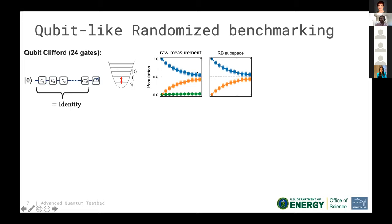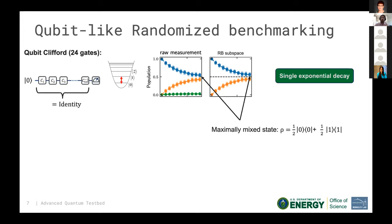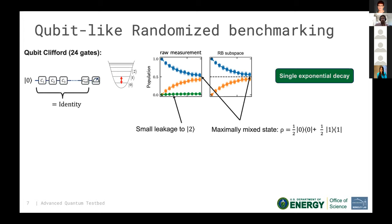As you increase the sequence depth you end up in the maximally mixed state, losing all information. What's nice is that you fit this curve with a single exponential decay, making it very accurate. Because we are fitting the exponential decay, we are also insensitive to state preparation and measurement (SPAM) errors. Furthermore, because we have a qutrit rather than a qubit, we can directly measure the leakage of qubit gates while performing randomized benchmarking.